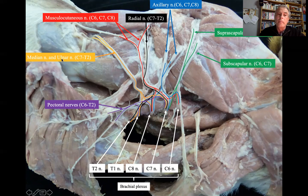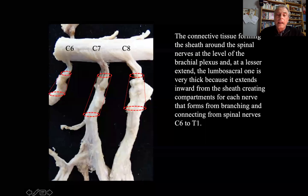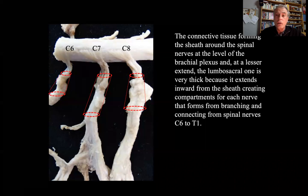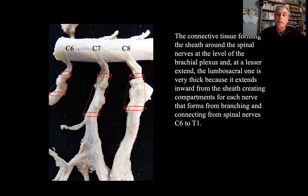For the rest — the pectoral nerve, the medial and ulnar, the musculocutaneous — you have them all here. When you do this dissection, you see that the spinal nerves C6, C7, C8 forming part of the brachial plexus increase in thickness as they leave the vertebral canal through the intervertebral foramen. This is an increase in connective tissue forming the sheath around the spinal nerves at the level of the brachial plexus — also present but less marked at the lumbosacral plexus — and this is to allow the fibers to mix.